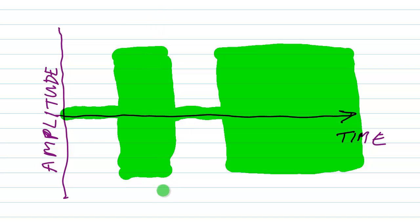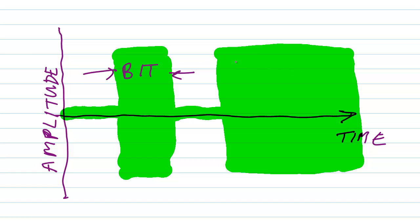This right here on the left is the dot, there's the dash, there's the space. CW can be thought of as on-off keying bit by bit, where a bit is the length of one dot. A dash is three bits long, and a space between the dot and the dash is one bit long in a perfectly timed letter A in Morse code — da-da, like that.